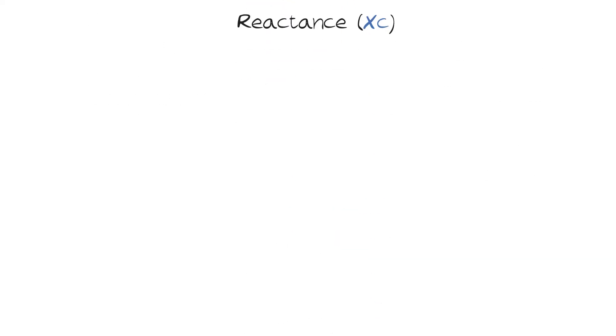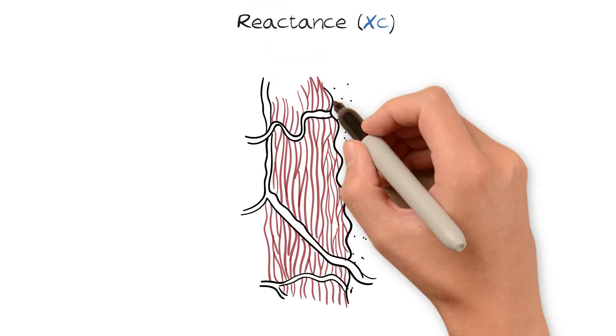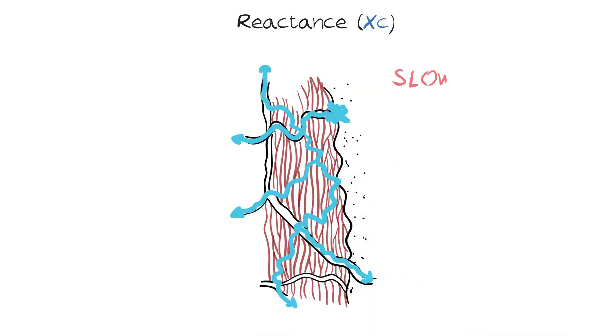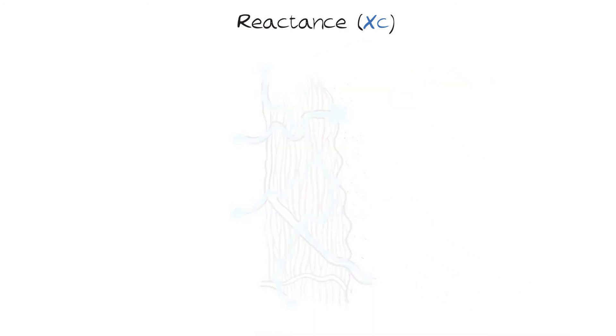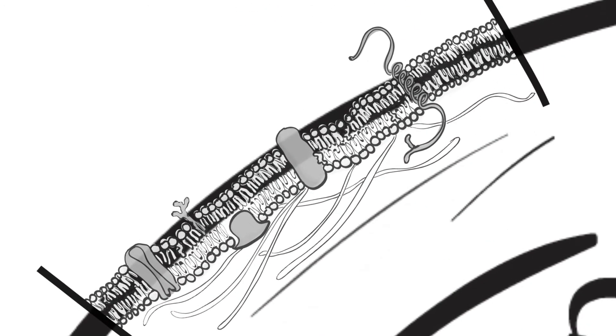The other component of impedance is reactance, and is the measure of a material's ability to slow a current. For example, cell membranes can store a charge for a short period of time, thus slowing the current.